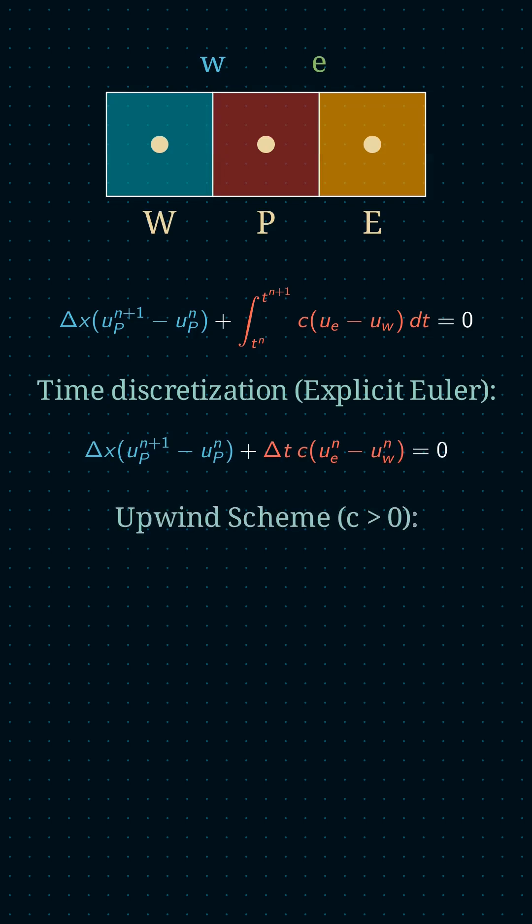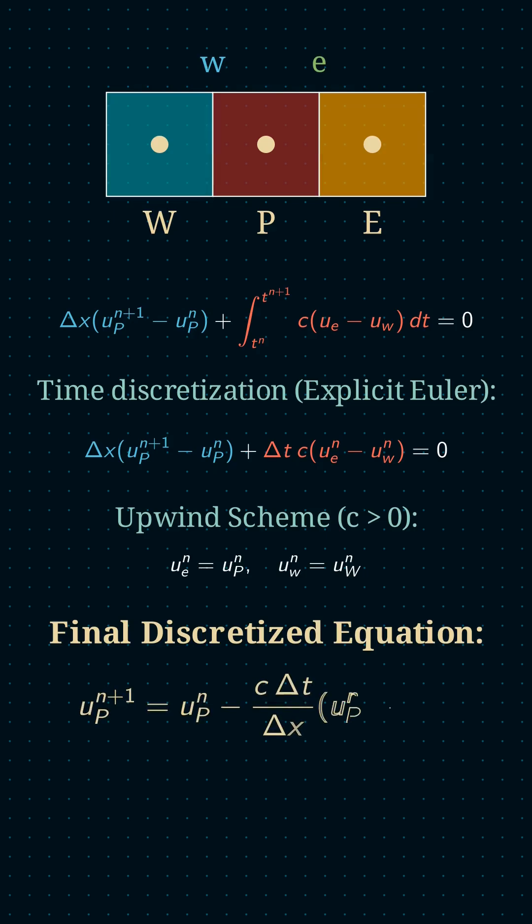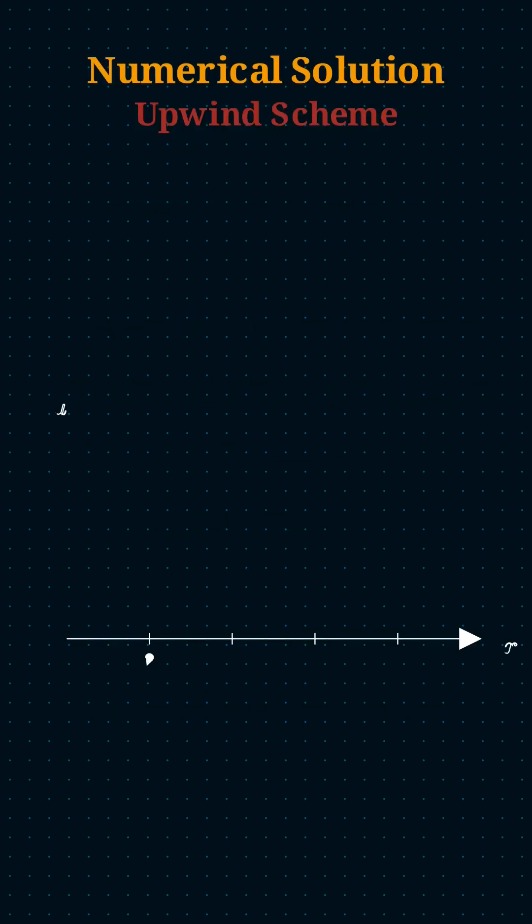For time, I use the explicit Euler scheme, which basically means that I'm using the present to calculate future. And for space, I use the upwind scheme, which means basically that when I move forward, I take the information from behind and calculate what's ahead of me in space.